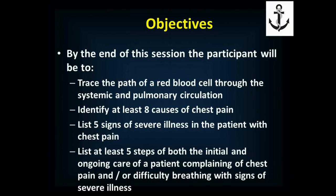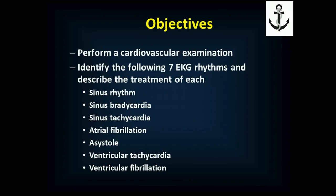By the end of this session, you'll be able to trace the path of a red blood cell through the systemic and pulmonary circulation, identify at least eight causes of chest pain, list five signs of severe illness in the patient with chest pain, list at least five steps in both the initial and ongoing care of a patient complaining of chest pain or difficulty breathing with signs of severe illness, perform a cardiovascular examination, and identify the following rhythms and describe the treatment of each: sinus rhythm, sinus bradycardia and tachycardia, atrial fibrillation, asystole, ventricular tachycardia, and ventricular fibrillation.